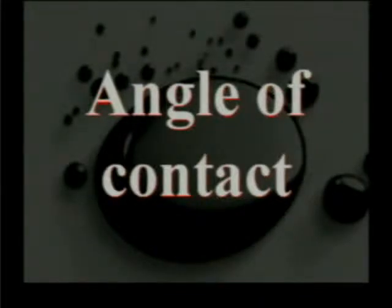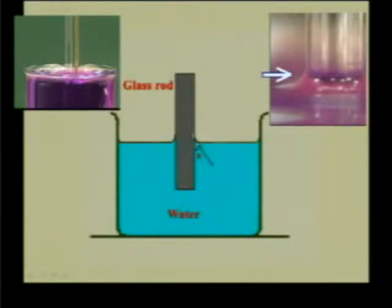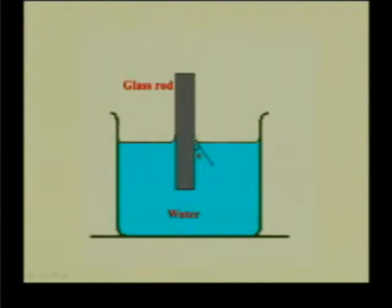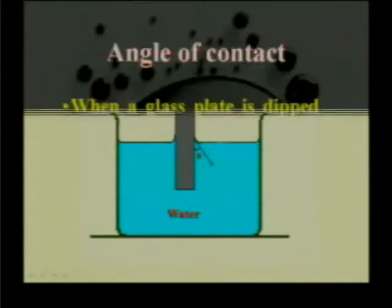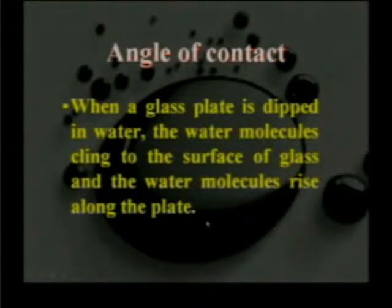Let us discuss the angle of contact. If you dip a glass rod in water, the water molecules will cling together and slightly rise at the surface. The surface is slightly curved at the rod and also at the walls of the container. When a glass plate is dipped in water, the water molecules cling to the surface of glass and rise along the plate.